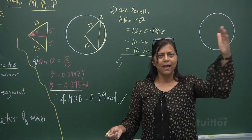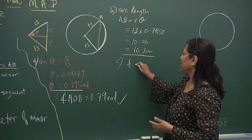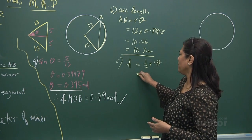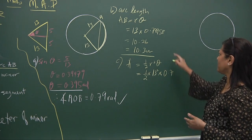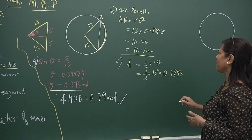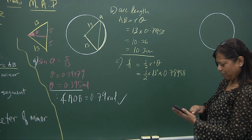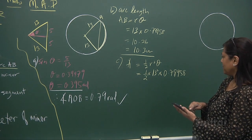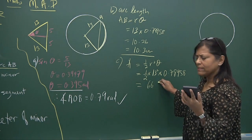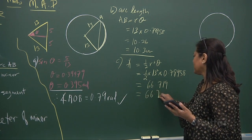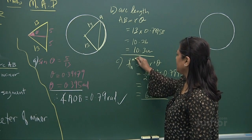Now for the area of the minor sector: the formula is area equals half R squared theta. So area equals half times 13 squared times 0.7895, which gives 66.7 cm². That's the area of the minor sector.